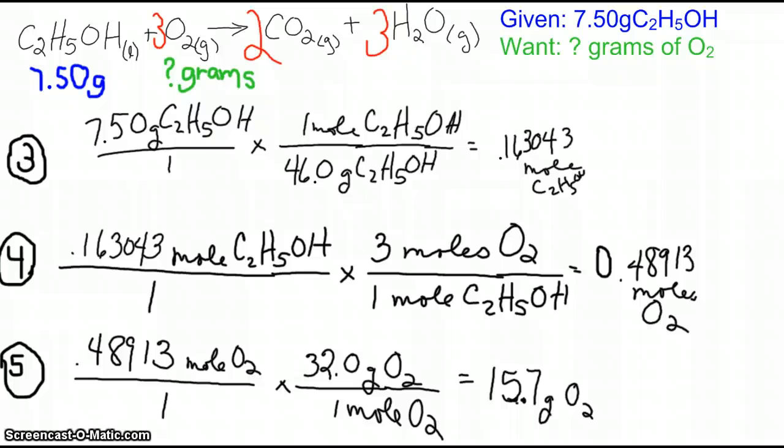Notice each of the steps. Number one is to balance the equation. Number two is to identify your given and what you want to calculate. The third step is to convert grams of your given to moles of your given. The fourth step is to compare moles to moles. And where do we get these numbers? This one and this three? From the coefficients in the balanced equation.